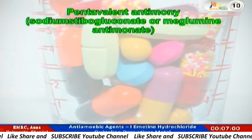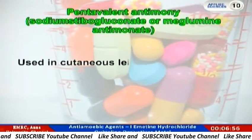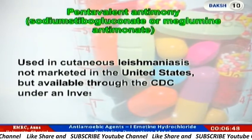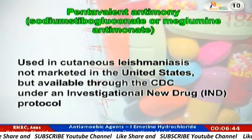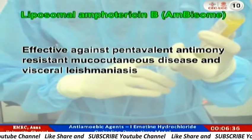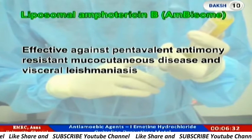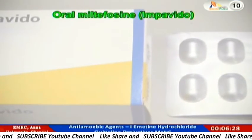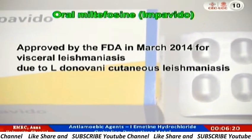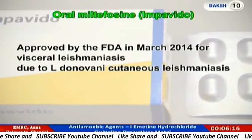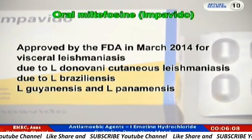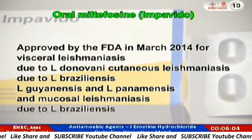Drugs for trypanosomiasis are used in cutaneous leishmaniasis — not marketed in the United States, but available through the CDC under an Investigational New Drug (IND) protocol. Liposomal Amphotericin B is effective against pentavalent antimony resistance, mucocutaneous disease, and visceral leishmaniasis. Oral miltefosine was approved by the FDA in March 2014 for visceral leishmaniasis due to L. donovani, cutaneous leishmaniasis due to L. braziliensis, L. guyanensis, and L. panamensis, and mucosal leishmaniasis due to L. braziliensis, L. guyanensis, and L. panamensis.